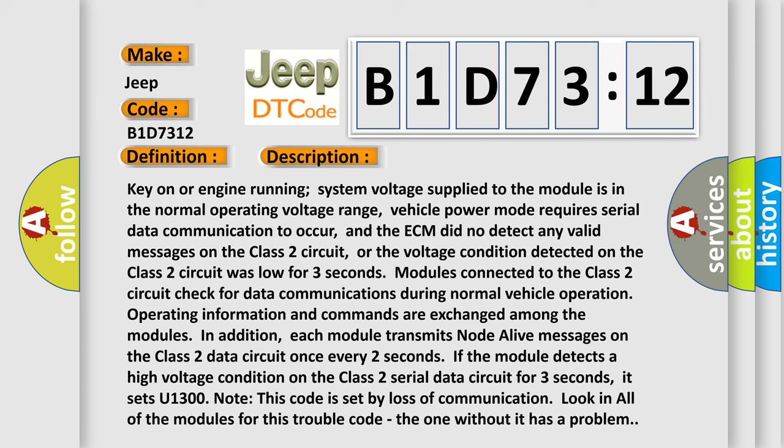Key on or engine running, system voltage supplied to the module is in the normal operating voltage range, vehicle power mode requires serial data communication to occur, and the ECM did not detect any valid messages on the Class 2 circuit, or the voltage condition detected on the Class 2 circuit was low for three seconds. Modules connected to the Class 2 circuit check for data communications during normal vehicle operation.